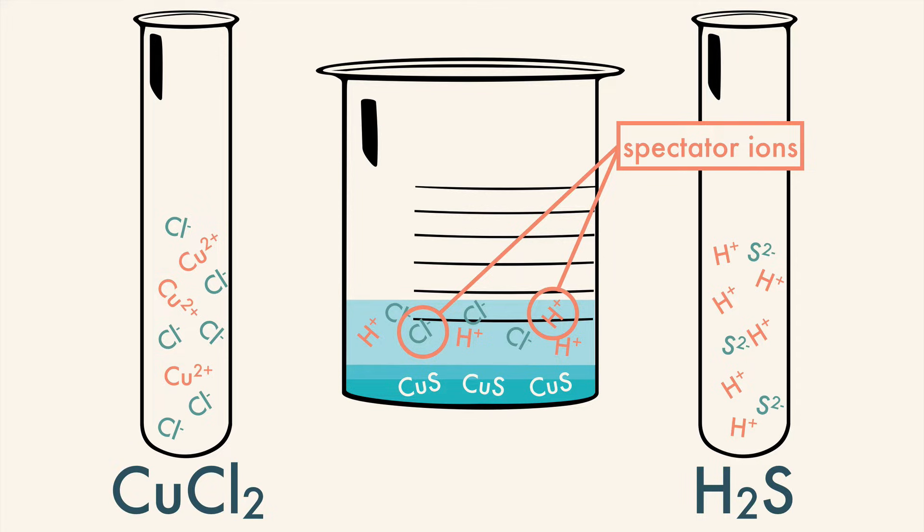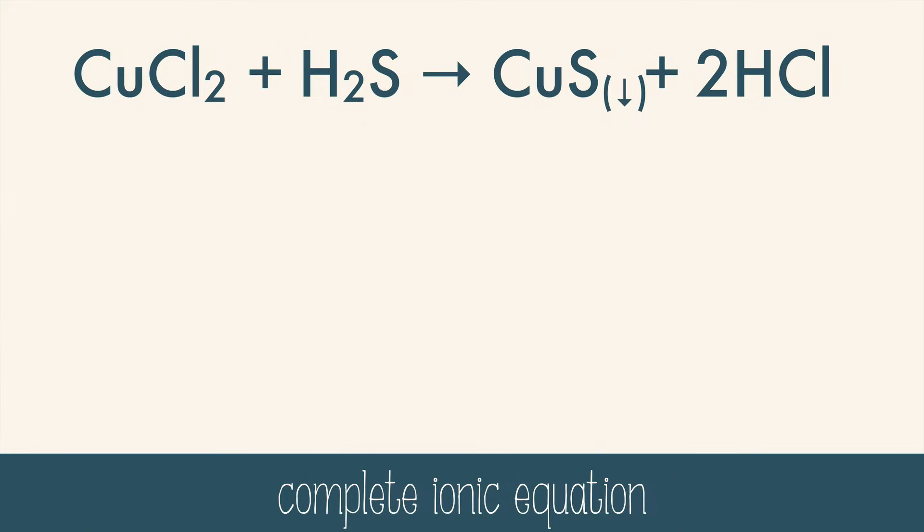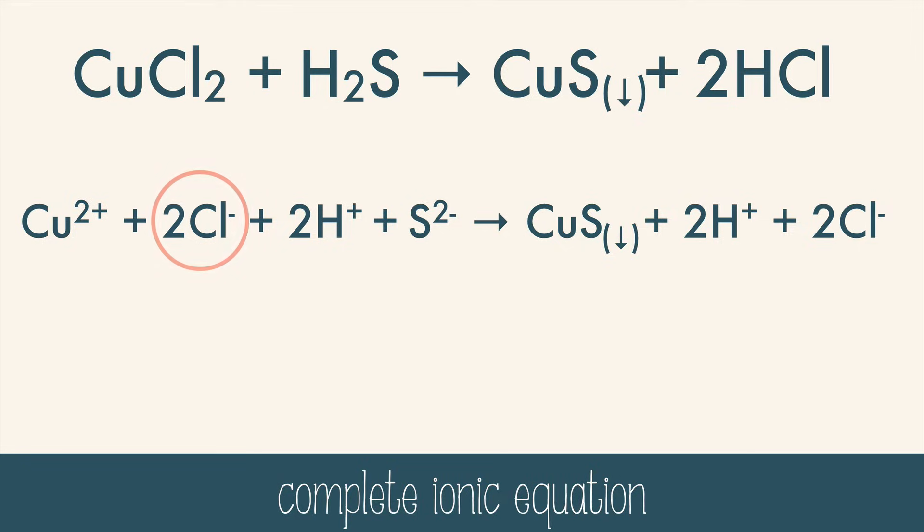Now we can write the equation a little bit differently. If we write out the equation with each ion written out instead of the ionic compounds, we can get a more truthful version of the story. Four different ions were mixed together. Two of them combined to make the precipitate, copper and sulfur, and the other two ions were spectators. You can easily spot the spectator ions in a complete ionic equation because they will be written on both sides of the equation. The two chlorine ions and the two hydrogen ions are the spectator ions in this case.